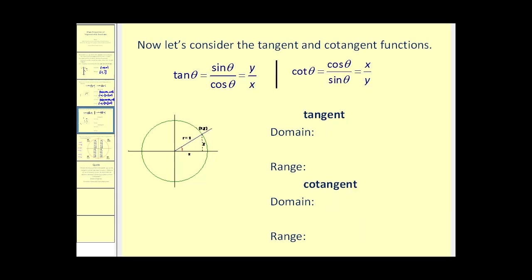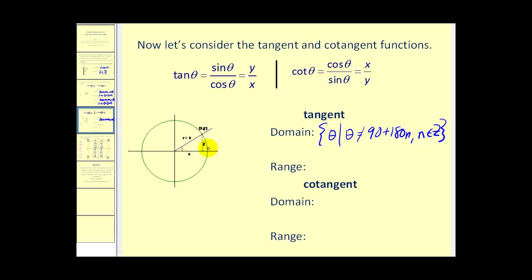Let's talk about tangent theta and cotangent theta. Tangent theta is not defined when x is equal to zero, and cotangent theta is not defined when y is equal to zero. For tangent, x would be zero at 90 plus any multiple of 180, so the domain is theta such that theta cannot equal 90 plus 180n, where n is some integer. For cotangent, y would be zero at zero, 180, and any multiple.